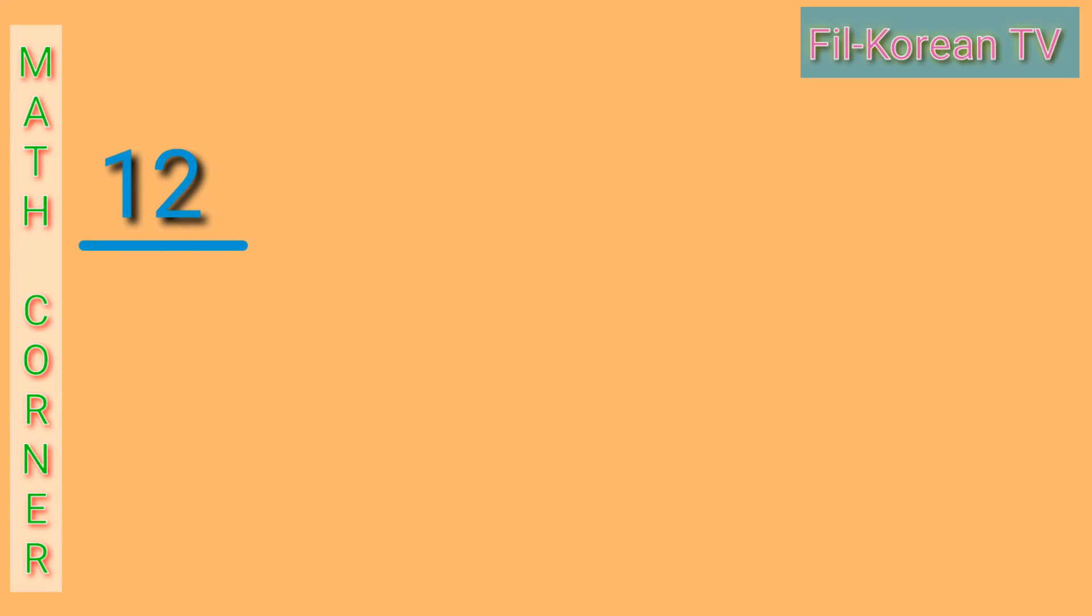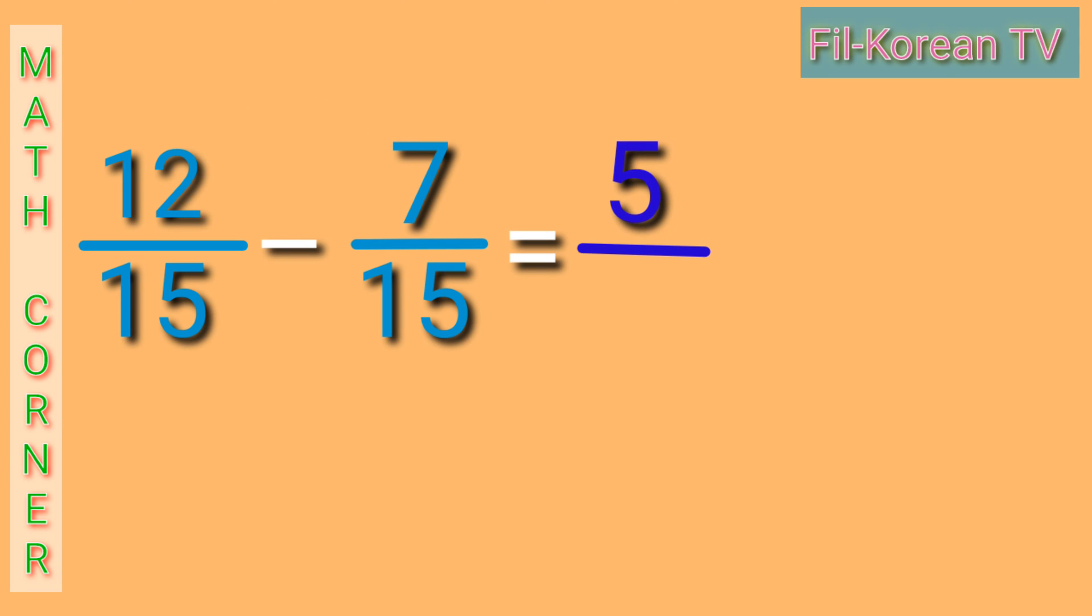Next example, 12 fifteenths minus 7 fifteenths equals. Let us subtract now. 12 minus 7 equals 5. And copy the common denominator 15. We can still reduce the answer to lowest term.